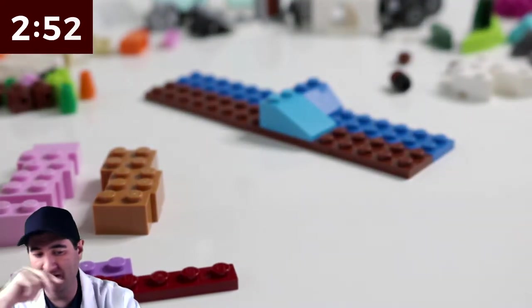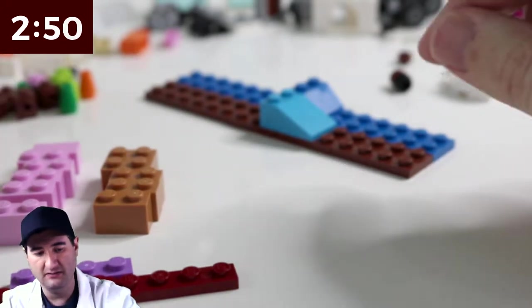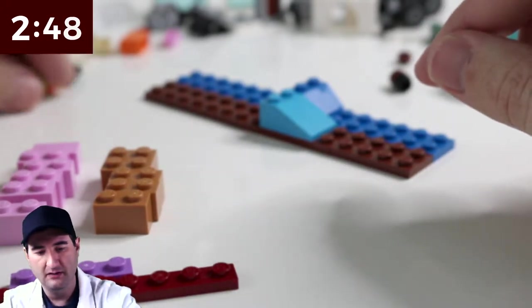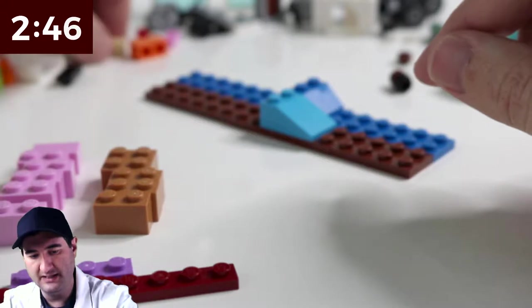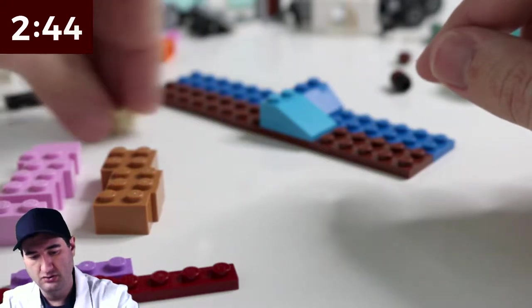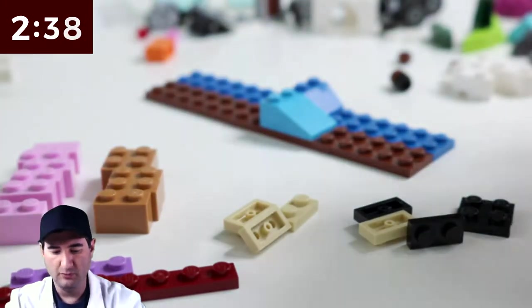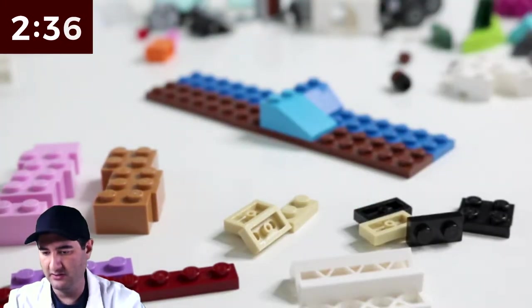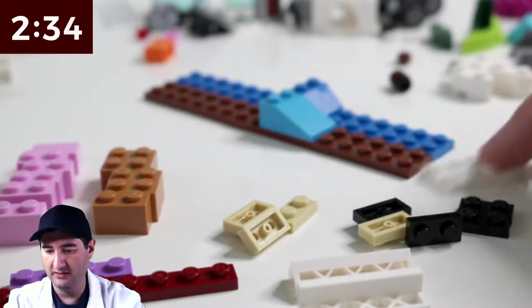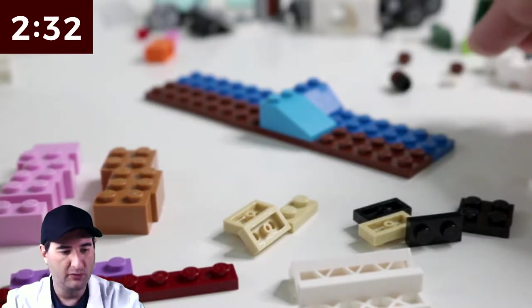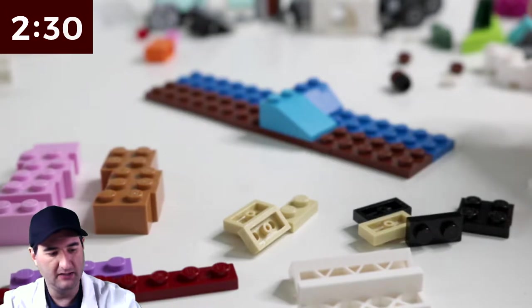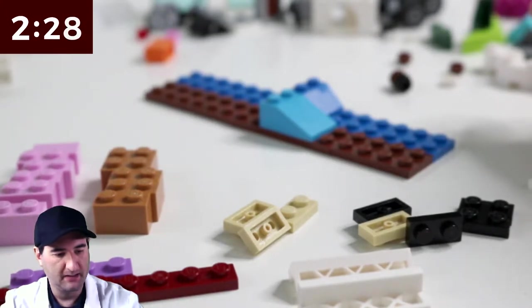So I have a bunch of one by twos in these colors here. So there's one by twos and then I have some one by four flat pieces. So we're getting into the nitty gritty of the pieces that we have, which is not much, right? We got blacks, we got tans. We have these, maybe we can use those just a little bit. And that's about it.